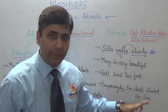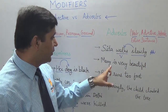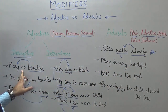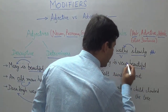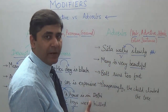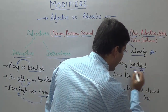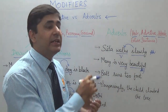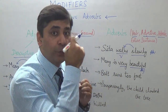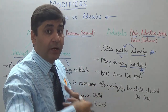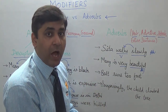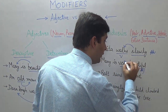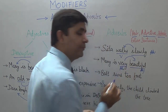'Mary is very beautiful.' Here 'beautiful' is a descriptive adjective telling you something about Mary. But what is 'very'? 'Very' is giving additional information about 'beautiful' — the degree of beautiful, how beautiful. Since a word that modifies an adjective is an adverb, 'very' becomes an adverb.